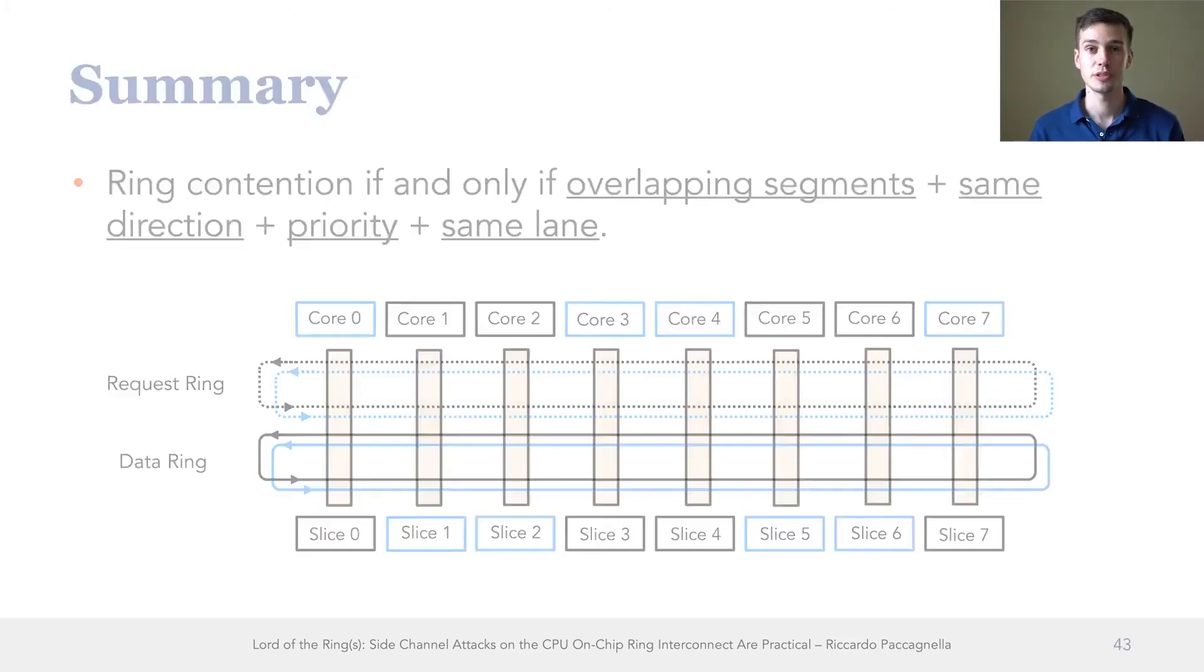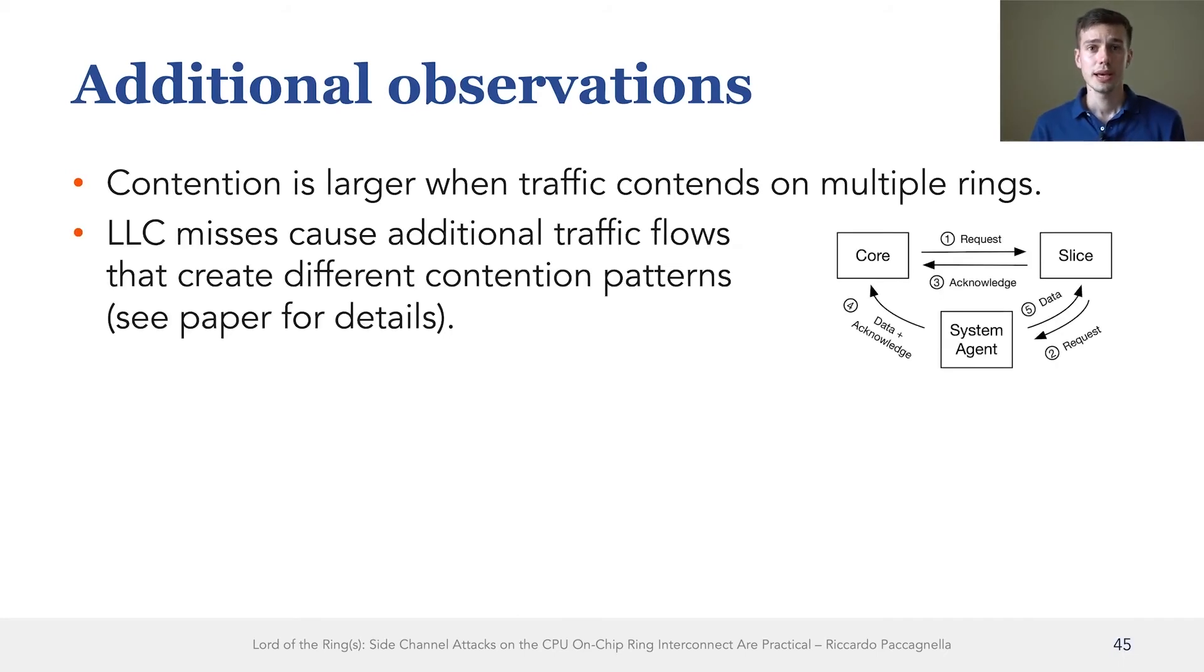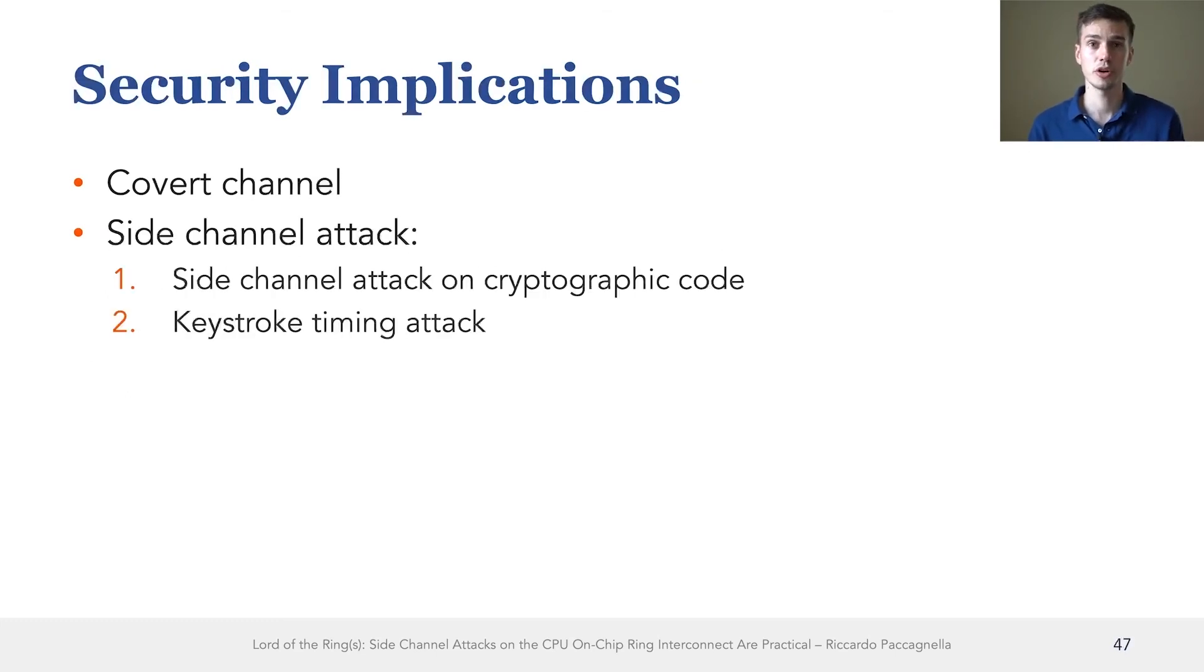Before I move on with part two of this talk, I want to bring up three additional observations. The first one is that when the sender and the receiver contend on more than one ring, then there is more contention. The second one is that we observed that when the sender misses in the last level cache, then it generates additional traffic flows, which cause additional contention. And in the paper, we provide every single detail about how these flows occur and why. And the third observation is that when the prefetchers are on, which is the default configuration, then the contention is amplified. I encourage you to check the paper to find details about these and other observations. But now we're ready to move on to part two.